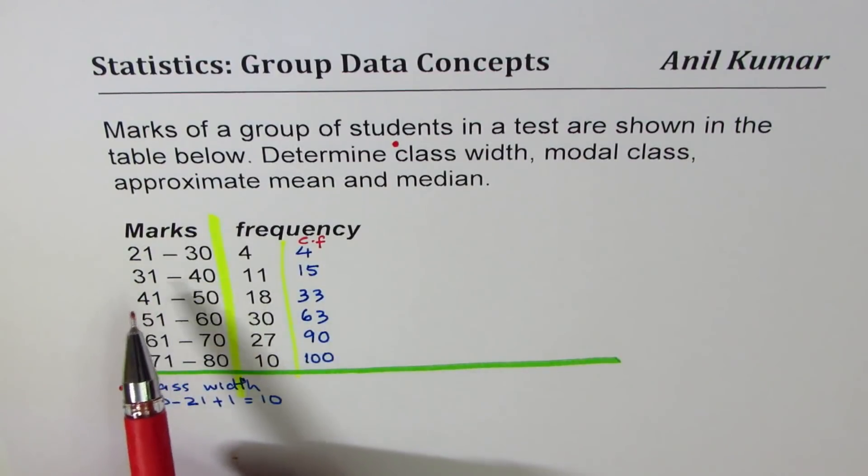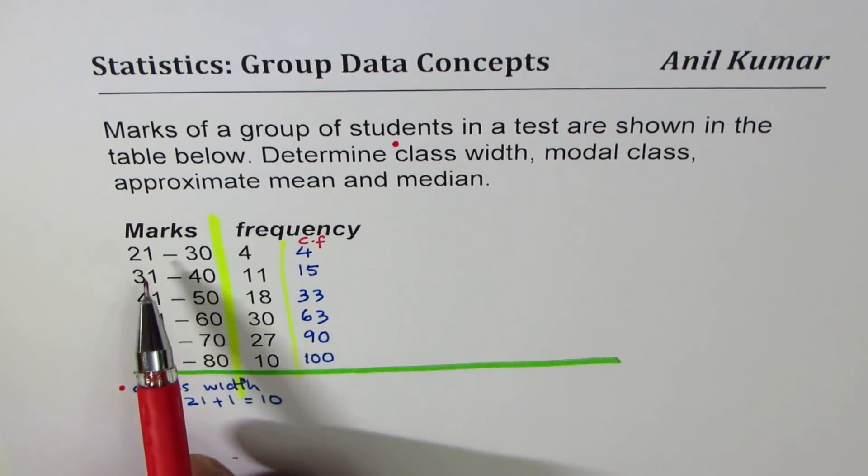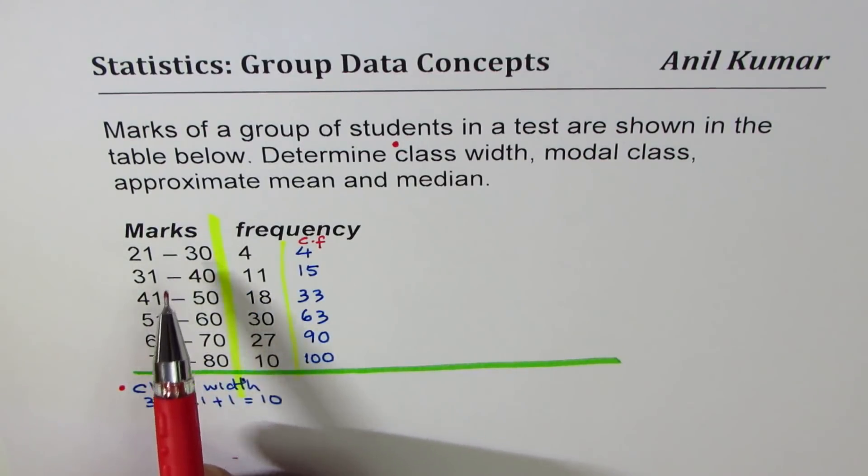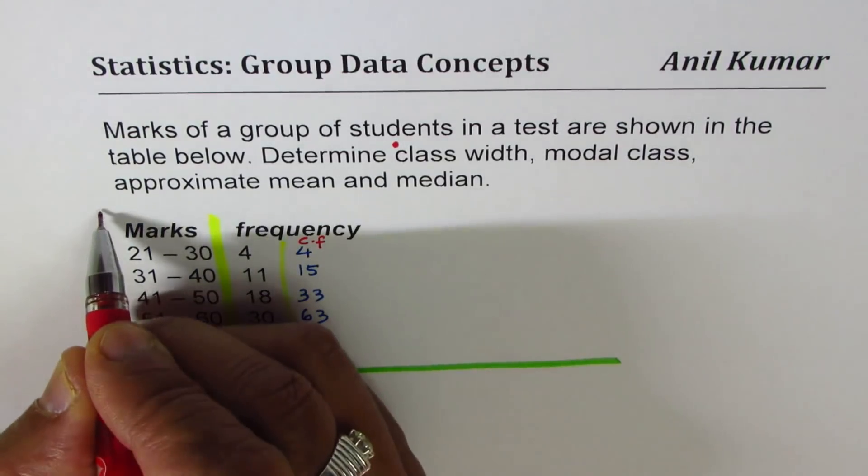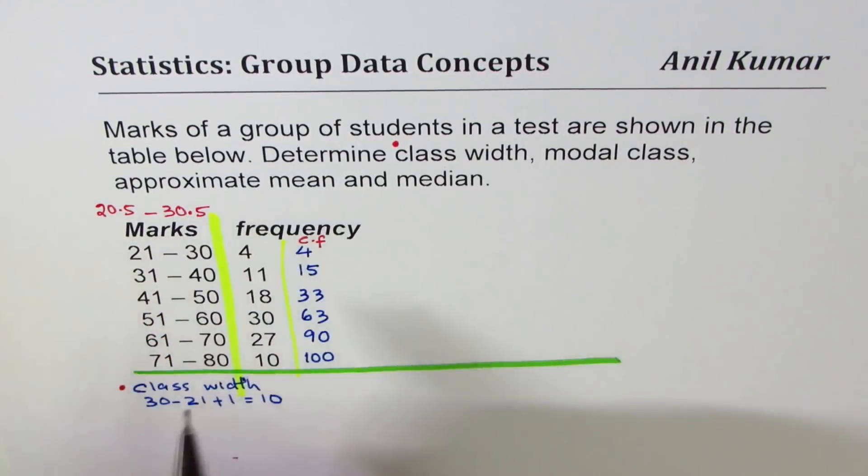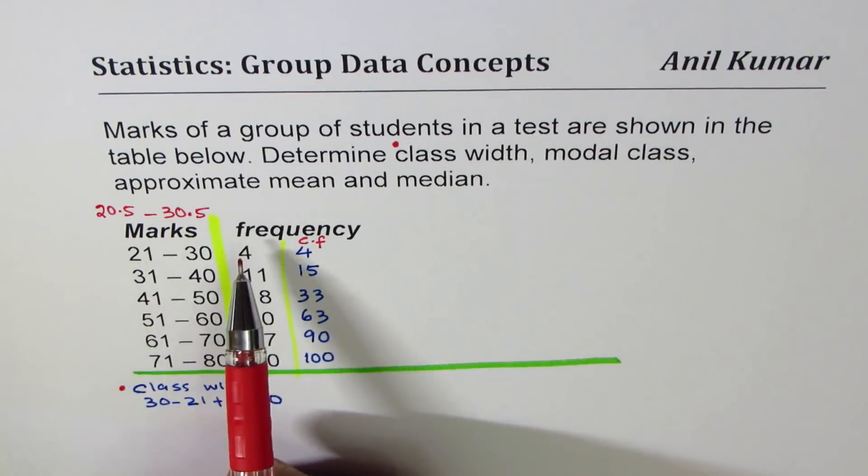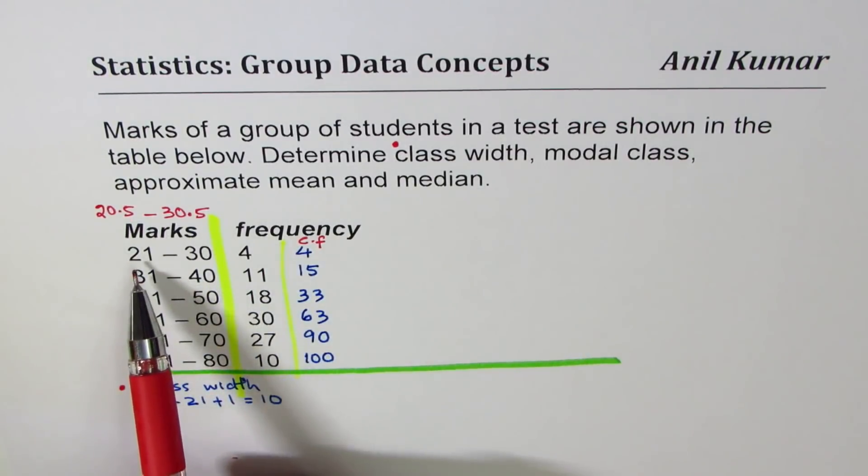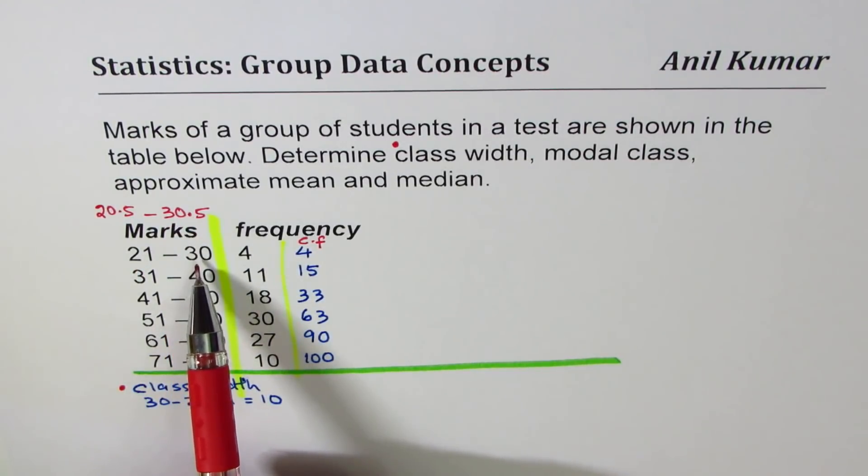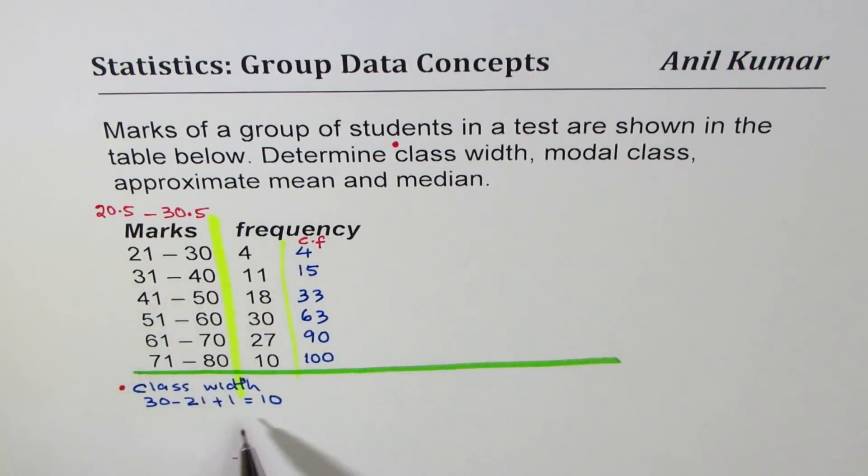Now sometimes you'll also find that when we have intervals, if we are given the data we at times make intervals like 20.5 to 30.5 just to be very precise. So if you have to create your own data frequency table, you consider marks above 20.5 within 21, less than 30.5 within 30. And if you take this difference you'll get 10. So that's another way of writing the same interval.